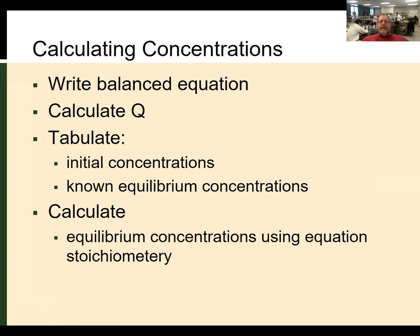When calculating concentrations, we do the same overall process: write a balanced equation, calculate Q, tabulate initial concentrations and any known equilibrium concentrations, then use concentration calculations with stoichiometry. This is all relatively simple stuff, which means you'll get caught in the details. The overall process isn't super difficult — make sure you keep track of the details.